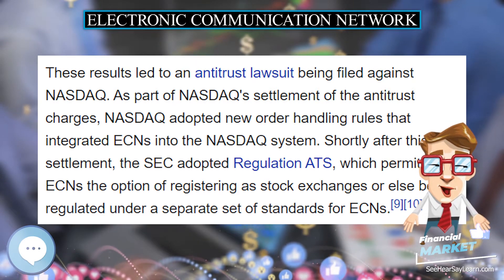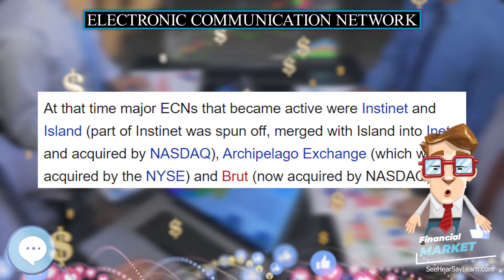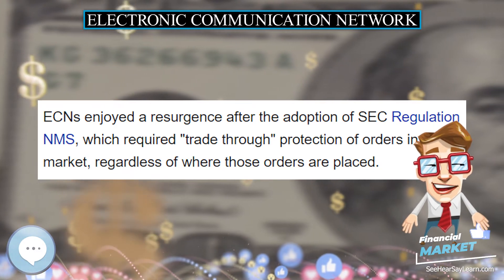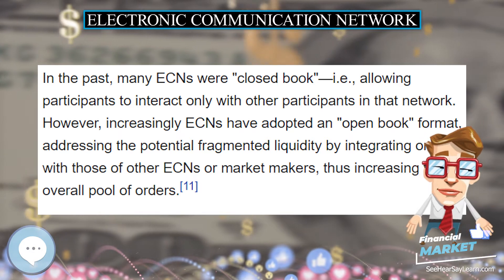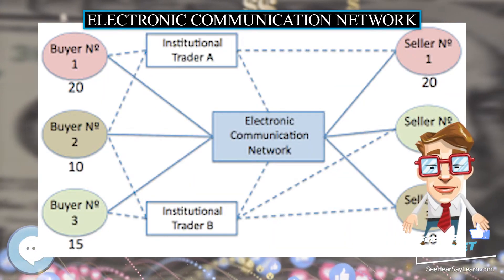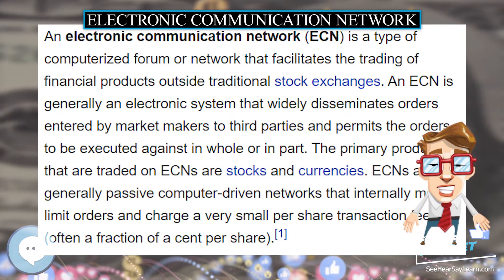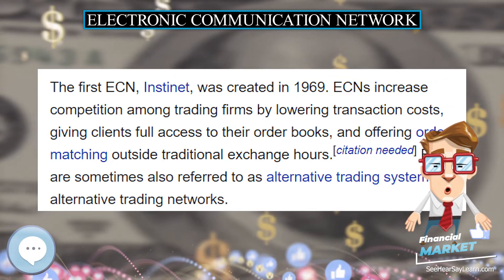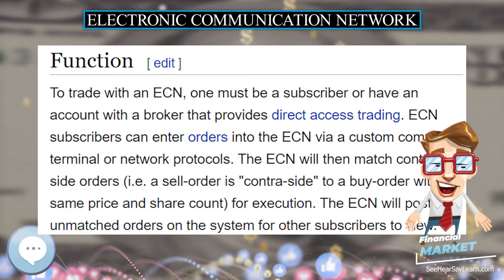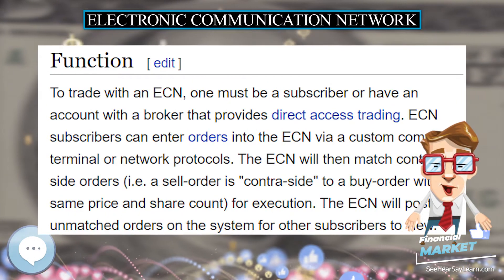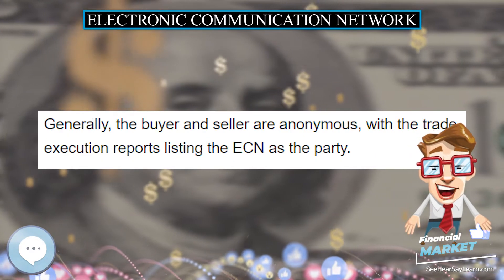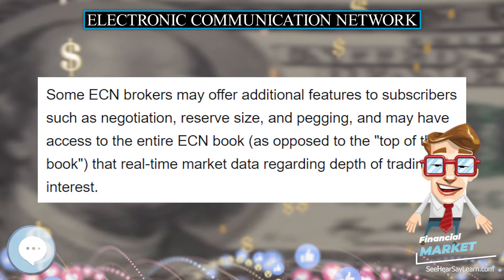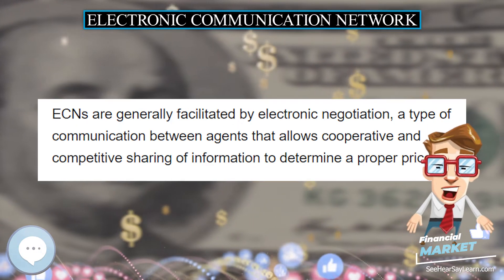ECNs are generally facilitated by electronic negotiation — a type of communication between agents that allows cooperative and competitive sharing of information to determine a proper price. The most common paradigm is the electronic auction type. As of 2005, most e-business negotiation systems could only support price negotiations. Traditional negotiations typically include discussion of other attributes of a deal, such as delivery terms or payment conditions. This one-dimensional approach is one of the reasons why electronic markets struggle for acceptance.